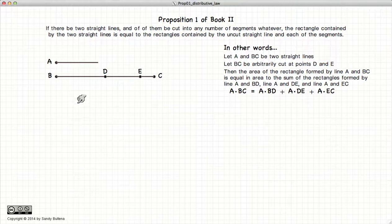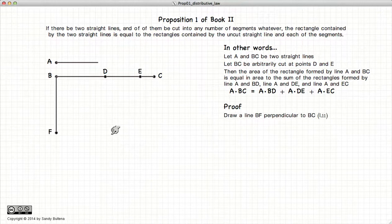So the first thing we're going to do is drop a perpendicular from B, going down, and create a point G such that the length of A is equal to BG.